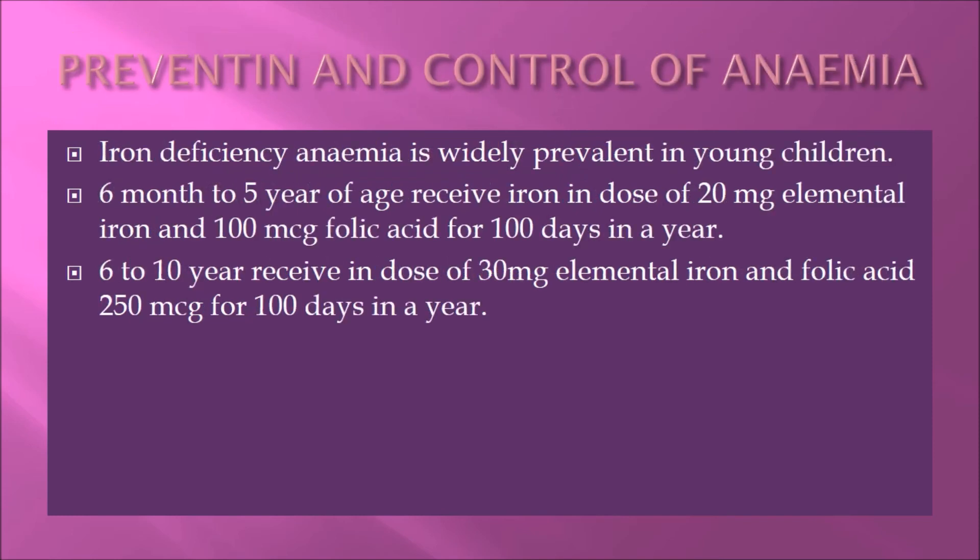Iron deficiency anemia is widely prevalent. Children aged six months to five years receive iron at a dose of 20 milligrams elemental iron and 100 micrograms of folic acid for 100 days in a year. Children aged six to ten years receive a dose of 30 milligrams elemental iron and 250 micrograms of folic acid for 100 days in a year.